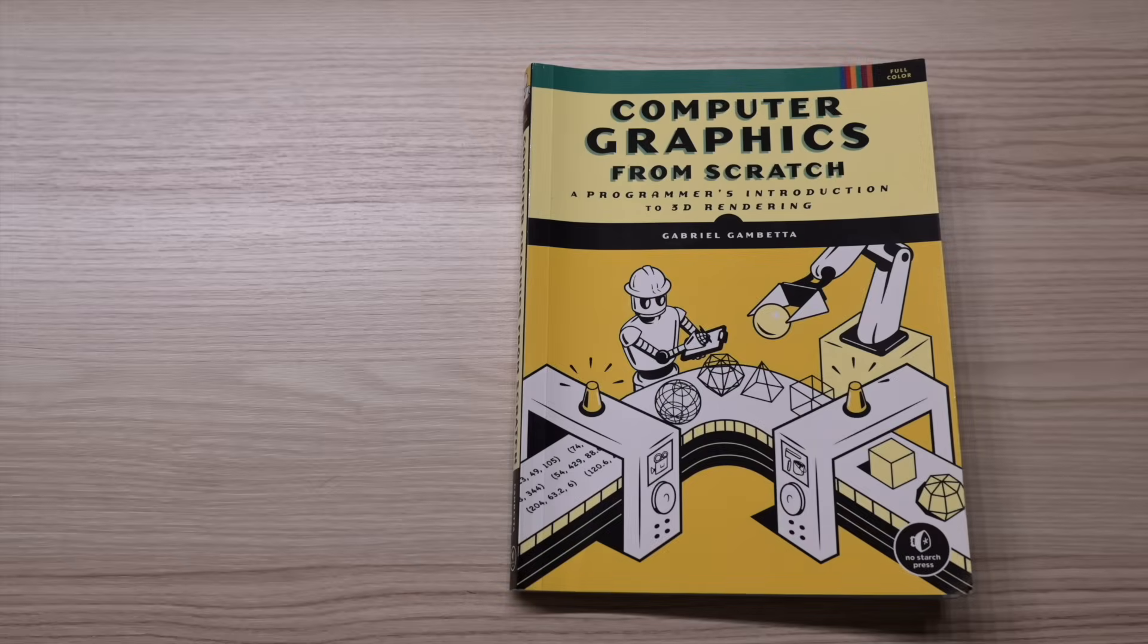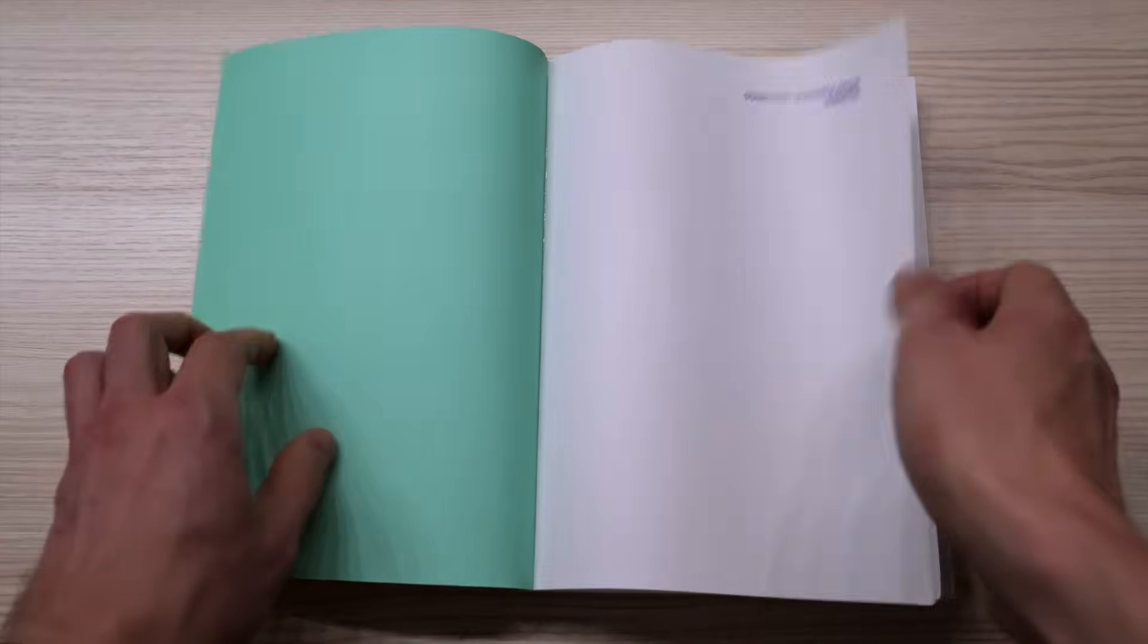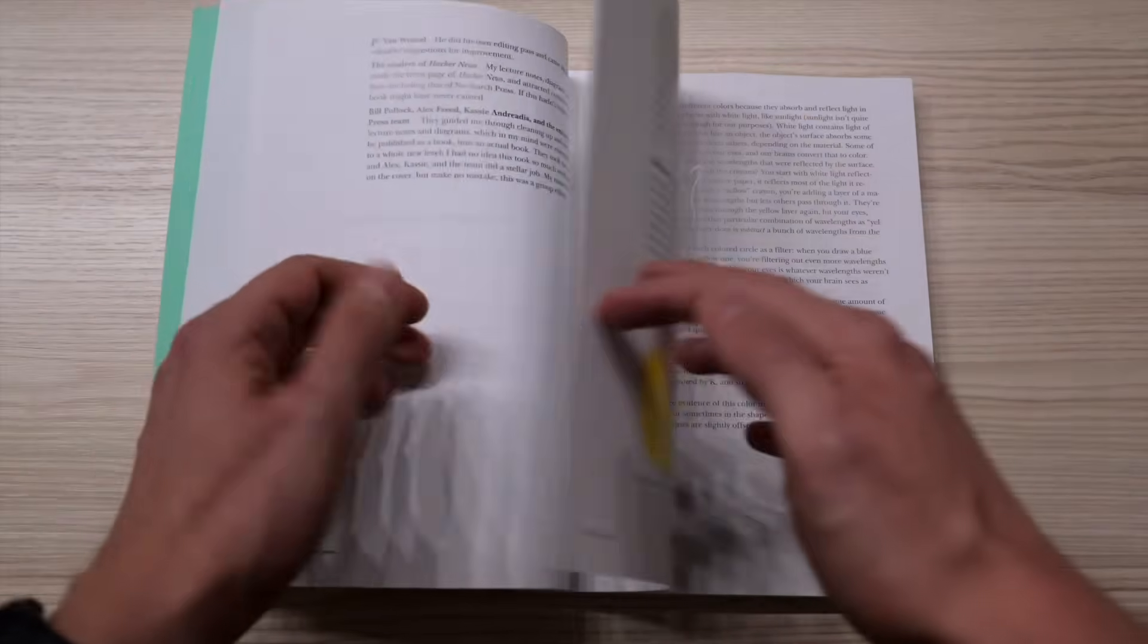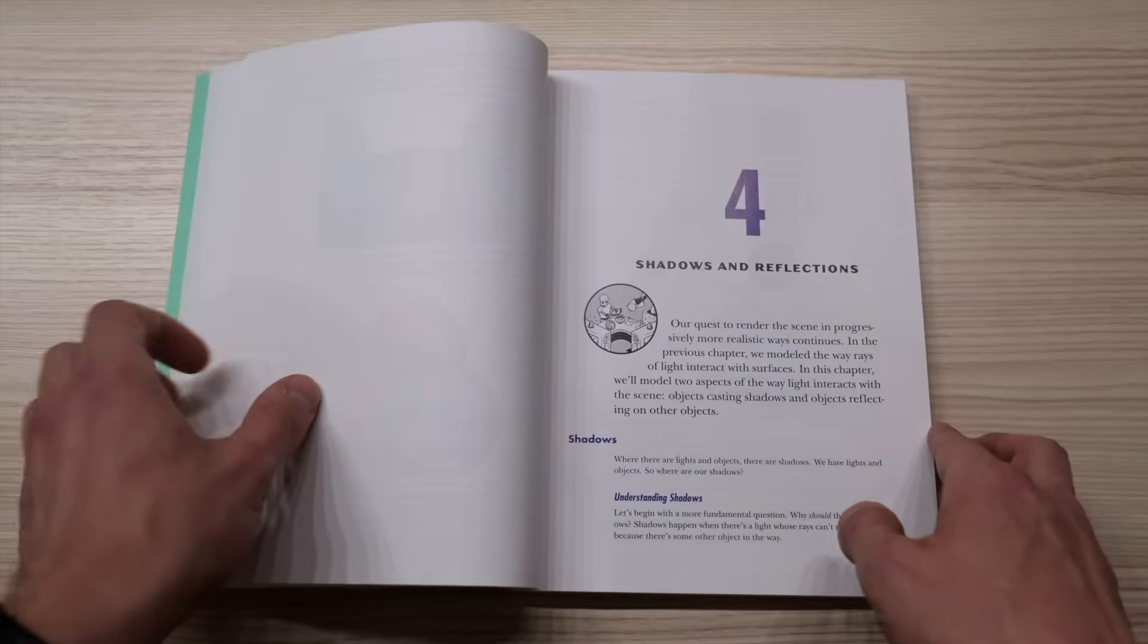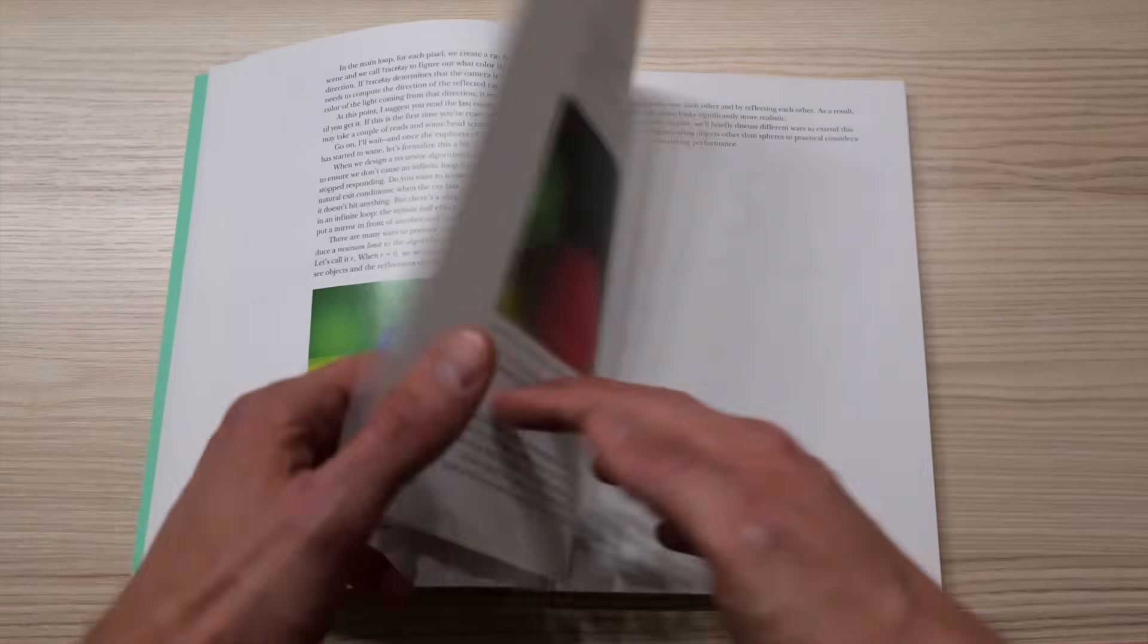Welcome to my first ever book review on this channel. Today I would like to show you this little book titled Computer Graphics from Scratch. It's easy to dismiss it at first with its cute cover, shiny paper and colorful images, but don't get fooled. This book covers some serious ground and yields real results, like a fully working implementation of a ray tracer, for example.